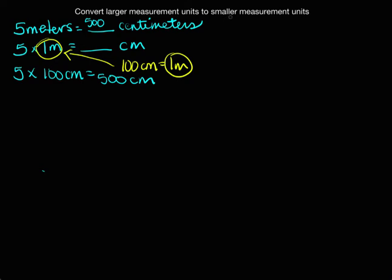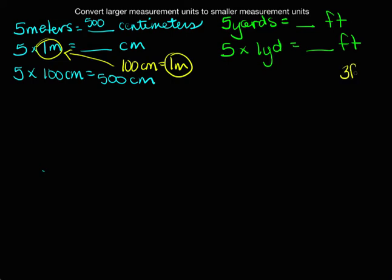Let's try another one. Let's try 5 yards equals, let's see how many feet, convert this to feet. So again, I'm going to use the same method. I'm going to rewrite my problem as 5 times 1 yard or 5 copies of 1 yard. And I'm trying to figure out how many feet that is. I'm going to ask myself, what do I know? Well, I know that there are 3 feet in 1 yard.